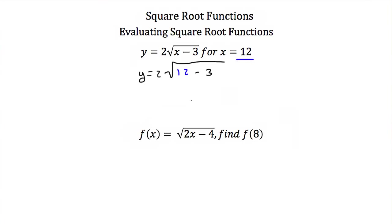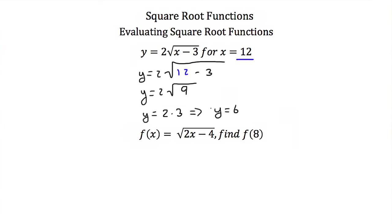Now 12 minus 3 is 9, so this is y is equal to 2 times the square root of 9. The square root of 9 is 3 — 9 is a perfect square of 3. So this is y is equal to 2 times 3, and 2 times 3 is just 6. So our y is equal to 6 when x is equal to 12.